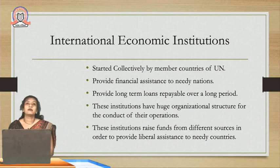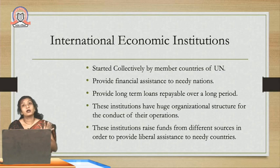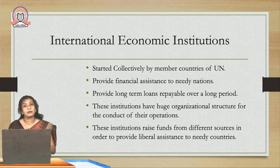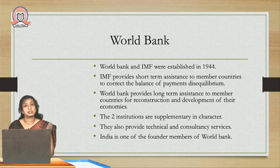To understand the international marketing environment, first and foremost we need to understand the economic environment prevailing in international trade and business. World Trade Organization is an organization which basically governs the trade of the entire world. There are certain financial institutions which have been formed which help developing countries, developed countries and underdeveloped countries. We are going to primarily see two main institutions - one is the World Bank and the second is the International Monetary Fund - and understand the difference between these two and how they provide assistance.